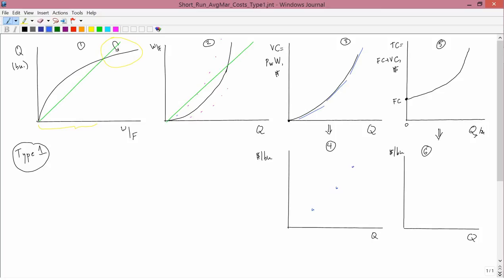We have no idea what shape graph 4 has, whether it's concave, convex, whatever. We don't know. It's the marginal variable cost.